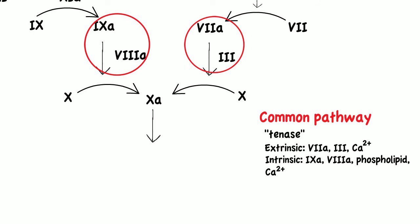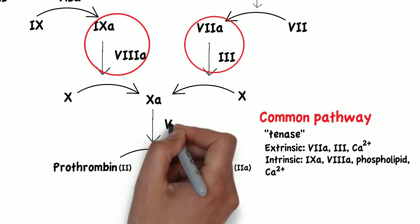Factor 10a will then cleave prothrombin, which is factor 2, to thrombin, which is factor 2a, with the help of the cofactor factor 5a.